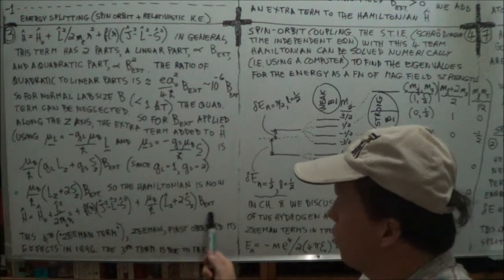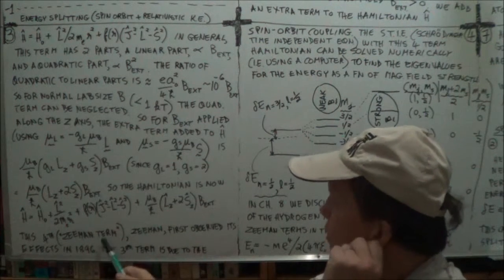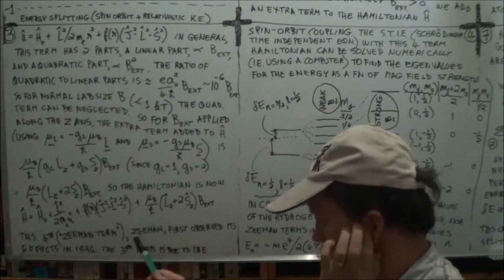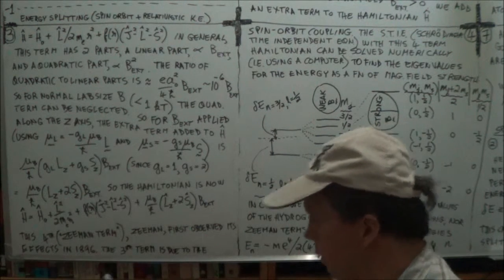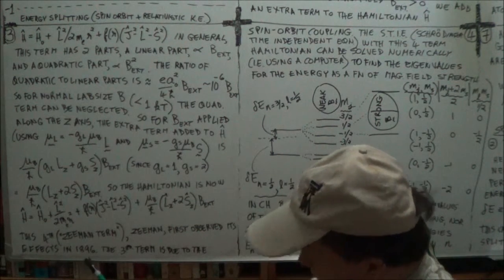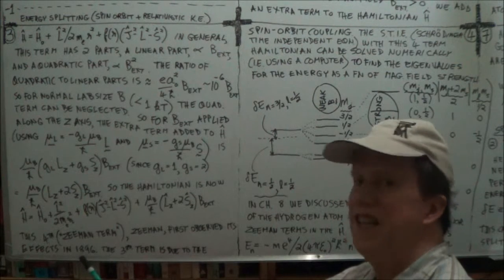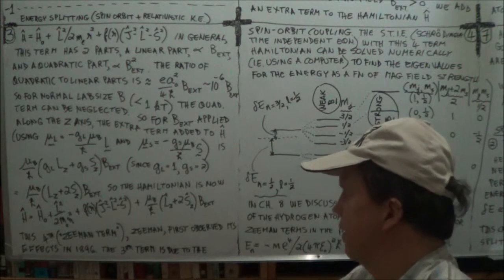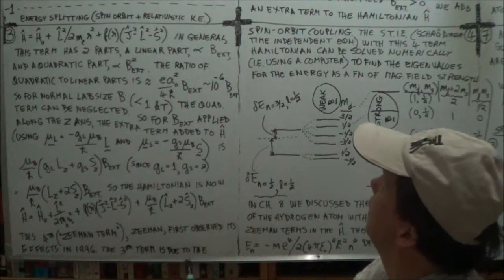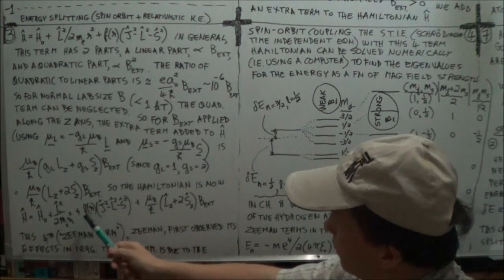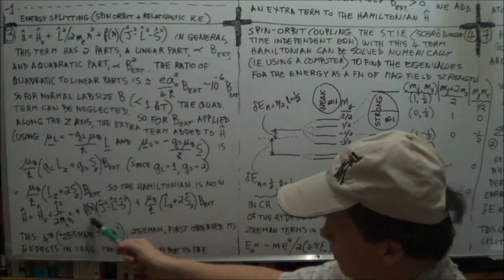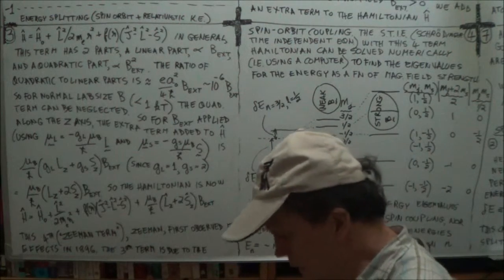So this fourth term, the Zeeman term. Zeeman, the physicist who first observed way back over a century ago in 1896, so in the 1800s. Now the third term is due to spin orbit coupling. We've dealt with that in earlier sessions.